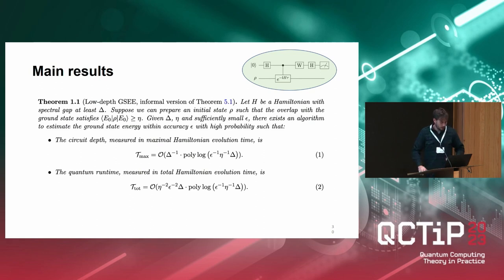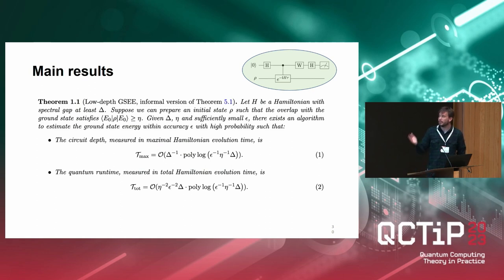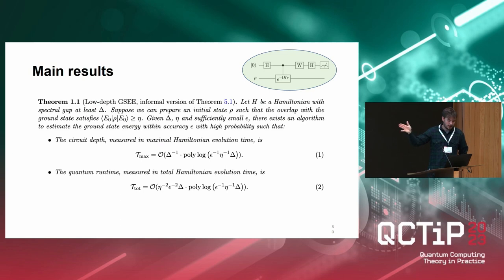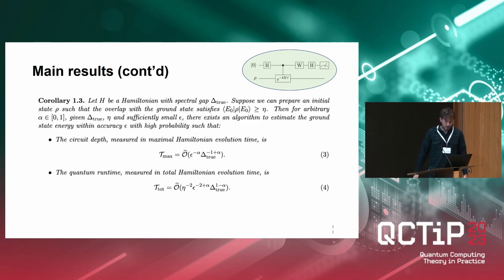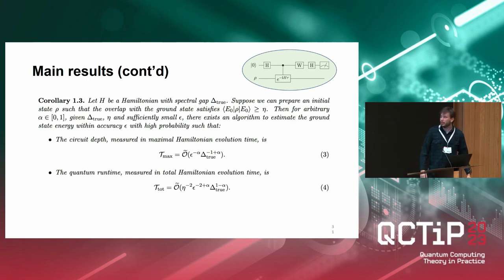What we get is a quantum algorithm that needs circuit depths proportional to the inverse of the gap, with polylogarithmic scaling in precision for the quantum circuits. The total time — the number of circuit runs — is then epsilon to the minus two. For this, you need a lower bound on the spectral gap. By interpolating between the true value and taking the lower bound to be epsilon, you get interpolation between epsilon to the minus two and epsilon to the minus one, depending on device constraints.